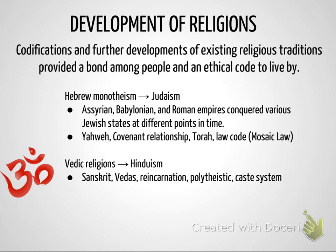One of the major things that happens during Period 2 is the development of major world religions. First, we're going to look at the development of some that are further developed because they already existed back in Period 1. Those two religions are going to be Hebrew monotheism, which is going to develop further into what we know today as Judaism.